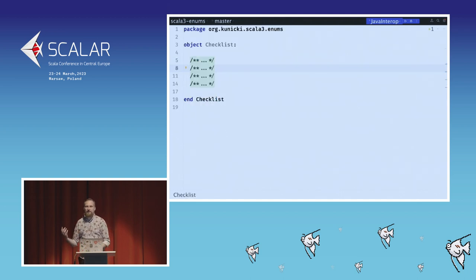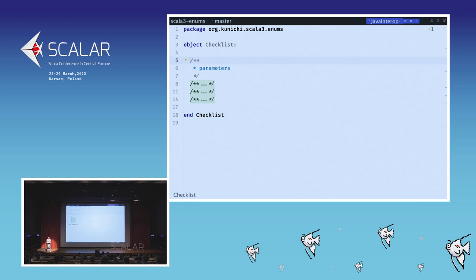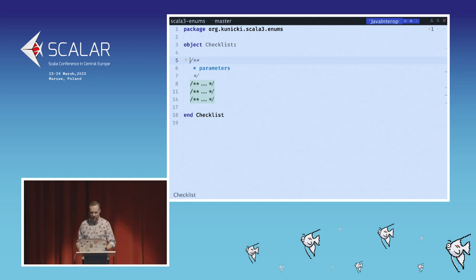For this journey, we'll use a short checklist, which I think is a set of the most common use cases that you have with Enums, and we'll go through each of the approaches and see how they fit this checklist. The first element on our checklist is parameters — whether our Enum implementation can take additional data, store additional data, have additional fields, additional methods, to include custom logic in this enumeration.